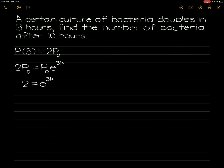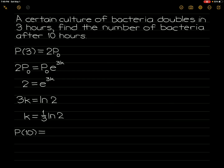We take the ln of both sides, which gives us 3k is equal to ln of 2. So k is equal to (1/3) times ln of 2. We are asked to find p(10), which is equal to p₀ times e raised to (1/3) ln(2) times 10.